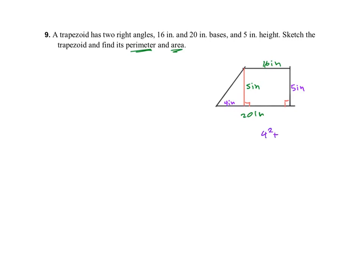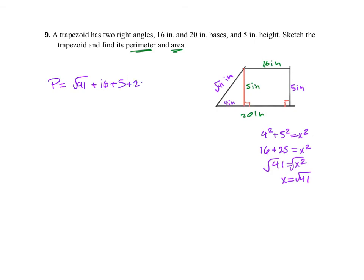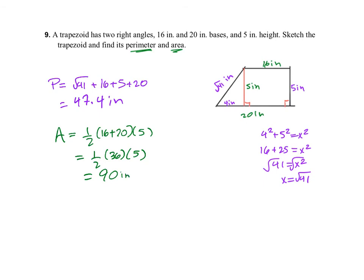Using the Pythagorean theorem: 4² + 5² = x², so 16 + 25 = x², giving x = √41 inches. The perimeter is √41 + 16 + 5 + 20, which equals approximately 47.4 inches. The area is one-half of (16 + 20) times 5, which is one-half of 36 times 5, giving 90 square inches.